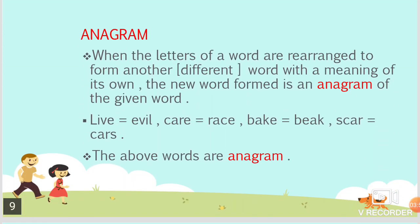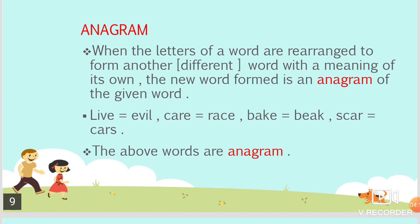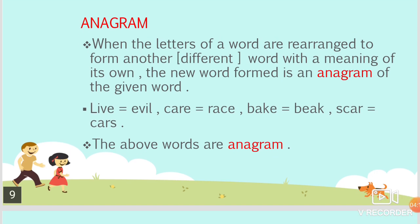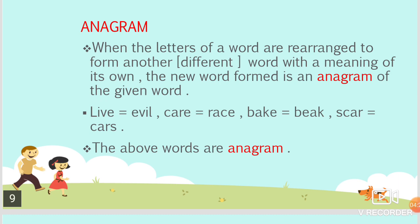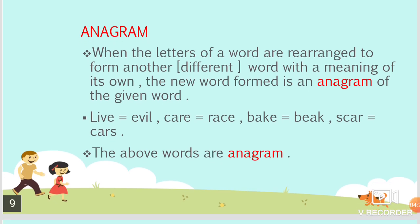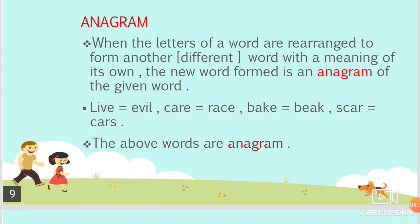What is an anagram? When the letters of a word are rearranged to form another different word with a meaning of its own, the new word formed is an anagram of the given word. For example, LIVE can be rearranged to EVIL; CARE can be rearranged to RACE; BAKE can be rearranged to BEAK; SEAR and CARS are also anagram pairs. The above words are anagrams.